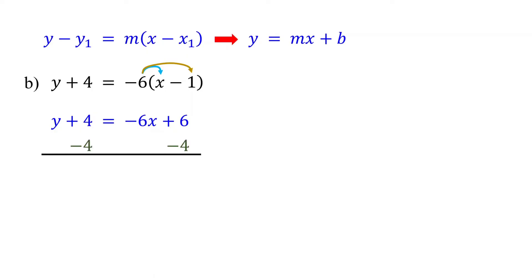isolate Y by subtracting 4 from both sides. On the left, these cancel, leaving Y by itself. On the right, 6 minus 4 is 2. This is your equation in slope intercept form, with a slope of negative 6 and a Y-intercept of 2.